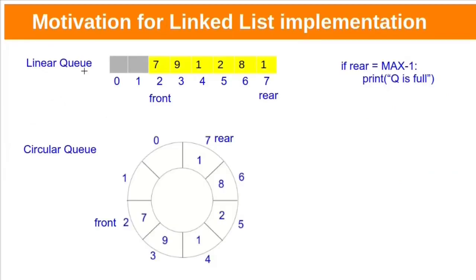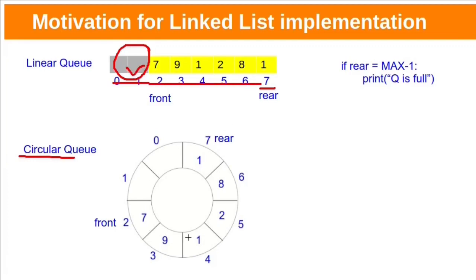In linear Queue, even if we have empty space, we cannot add elements to Queue if rear is set to the maximum index. But with circular Queue, we can utilize this empty space by turning the array into a closed circle, and then front and rear drift around endlessly in this circle. Yet, this circular Queue doesn't solve the main problem of array implementation.